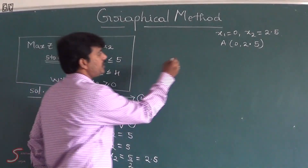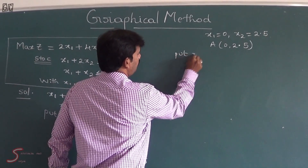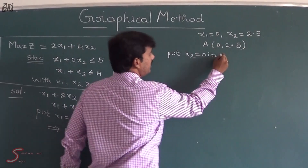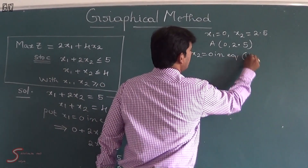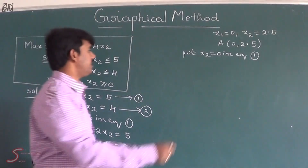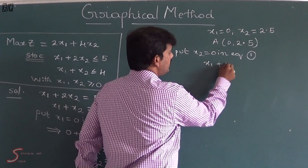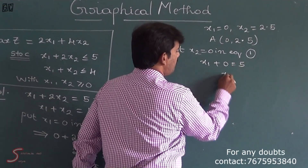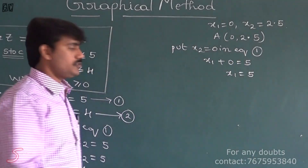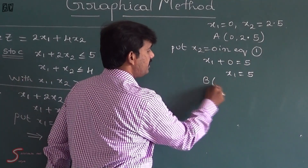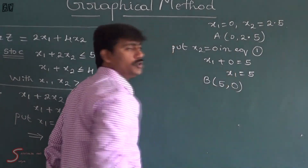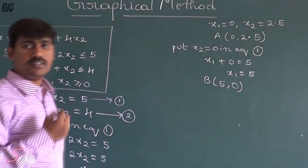If I put x2 equal to 0 in Equation 1, then x1 plus 0 equal to 5, obviously x1 equal to 5. So we have one more point B: x1 is 5, x2 is 0. We got 2 points for the first equation.